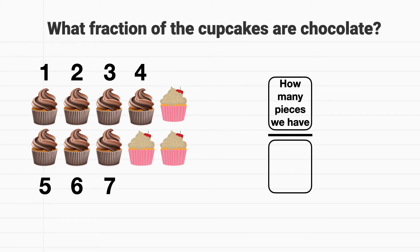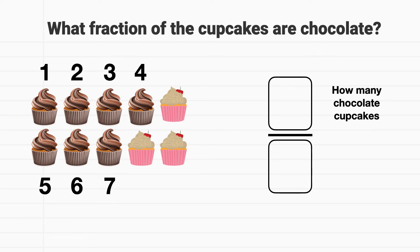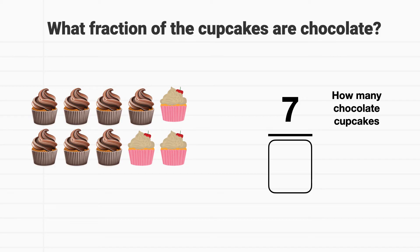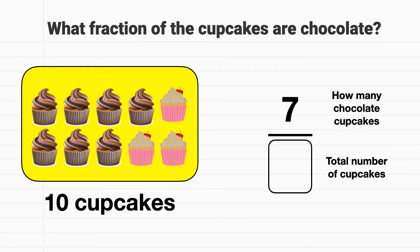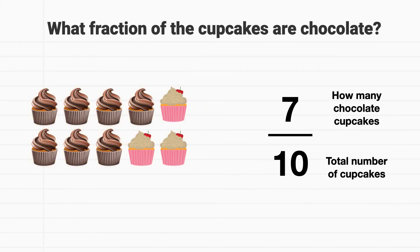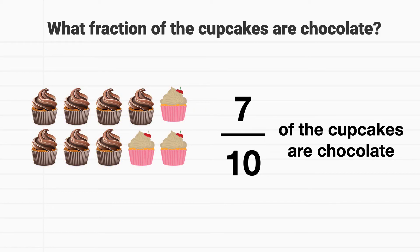7 represents the number of chocolate cupcakes we have, so this is the numerator, or the top number of our fraction. Now to find the denominator, we need to count up the total number of cupcakes. How many cupcakes are there in total? There are 10 cupcakes in total. The denominator of the fraction is 10. We can say 7 tenths of the cupcakes are chocolate.